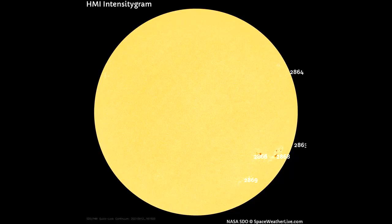With this HMI intensity gram map, five sunspot regions are seen on the Earth-facing side of the Sun.